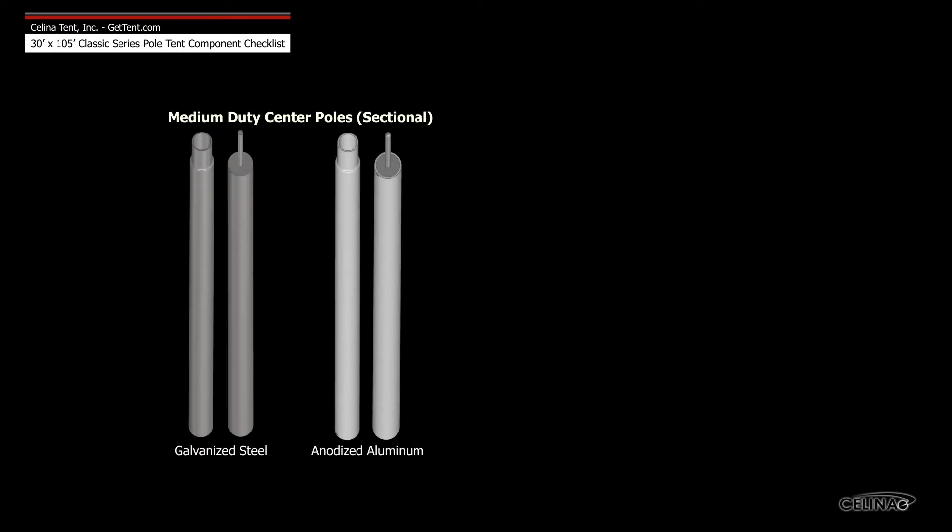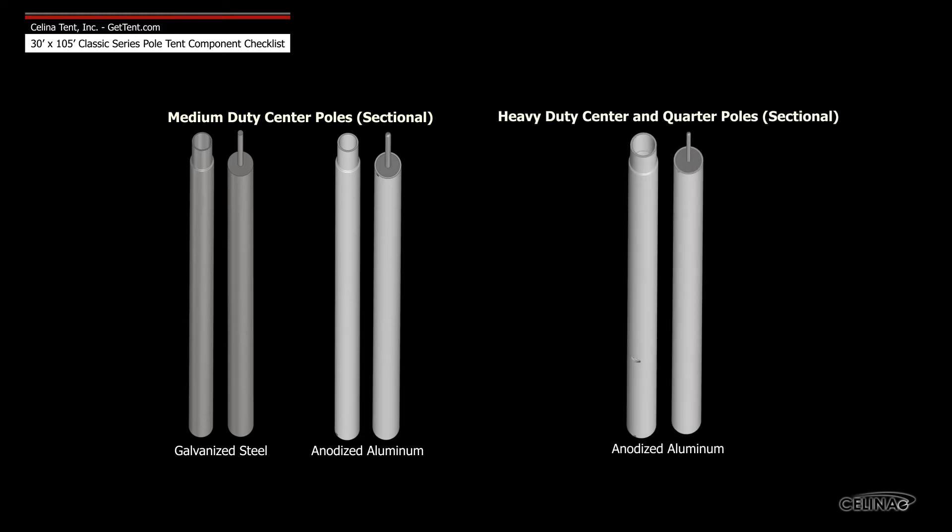Medium duty center poles are available in galvanized steel and anodized aluminum, and heavy duty center and quarter poles are only available in anodized aluminum.